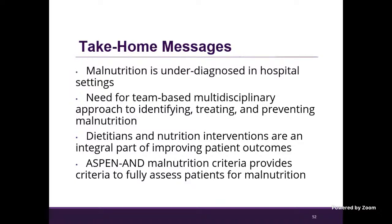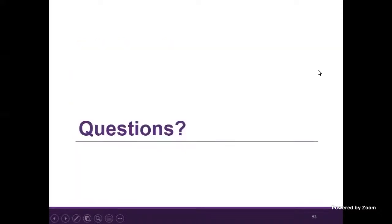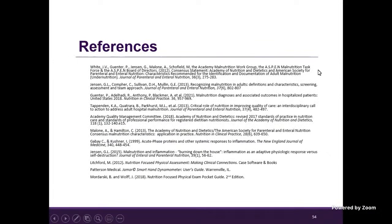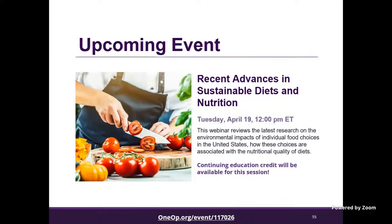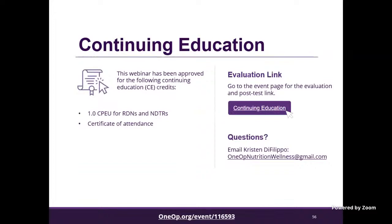Julia, this was fascinating. Thank you so much — it was a great presentation, and we're getting a lot of positive feedback. We're going to move right along to some housekeeping details. I'm very pleased to announce the upcoming event: 'Recent Advances in Sustainable Diets,' Tuesday, April 19th at 12 PM Eastern time. Continuing education is available — go to the event page, click on the purple evaluation link, complete the evaluation, fill in your name and email, and your CPEU certificate will be emailed to you. Government addresses such as .mil and .gov frequently will not accept automated emails, so you may want to use a personal email address. Any questions about your certificate, please contact Kristen DiFilippo at the 1UP Nutrition Wellness Gmail account.